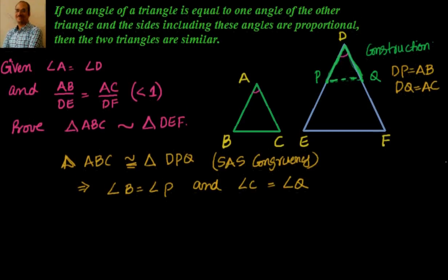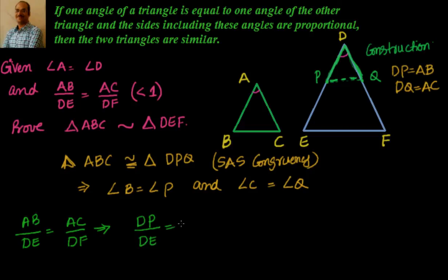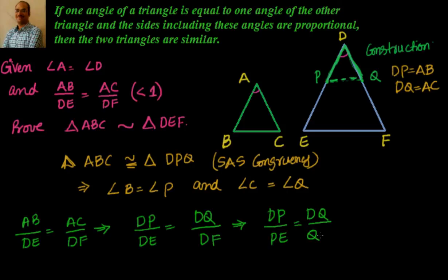Now let us leverage AB/DE equal to AC/DF. Since we have done DP equal to AB and DQ equal to AC, I can write AB/DE equal to AC/DF, which we can easily manipulate to DP/PE equal to DQ/DF. We can do that by reversing, subtracting minus 1 from both sides, and reversing back.